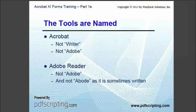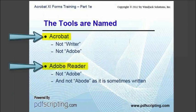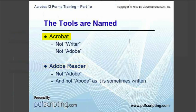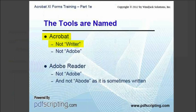To be clear, Adobe has two desktop tools for PDF. They are called Acrobat and Adobe Reader. There are two very common mistakes people make when referring to these tools. Number one: Acrobat is not Writer or Adobe Writer. It's named Acrobat. I often think Adobe would have been doing themselves a big favor if they had just named it Writer, but they didn't, so the tool is called Acrobat.